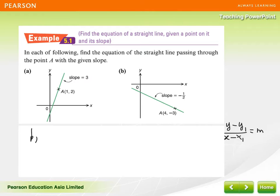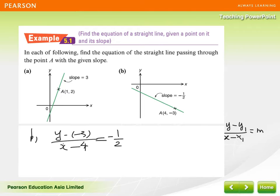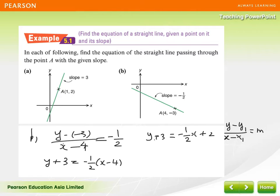Try one more example, part B. We use the point-slope form: (y minus negative 3) over (x minus 4) equal to negative 1 over 2. Multiplying both sides by the denominator: y plus 3 equal to negative 1 over 2 times (x minus 4). Expanding, negative 4 times negative 1 over 2 becomes positive 2. Moving positive 3 to the right side gives 2 minus 3. So the answer is y equal to negative 1 over 2 times x minus 1.